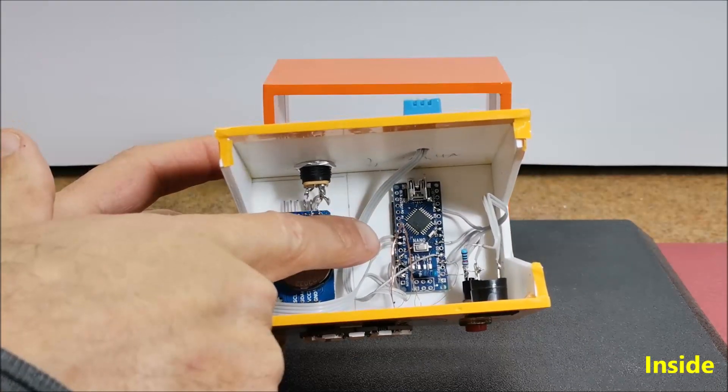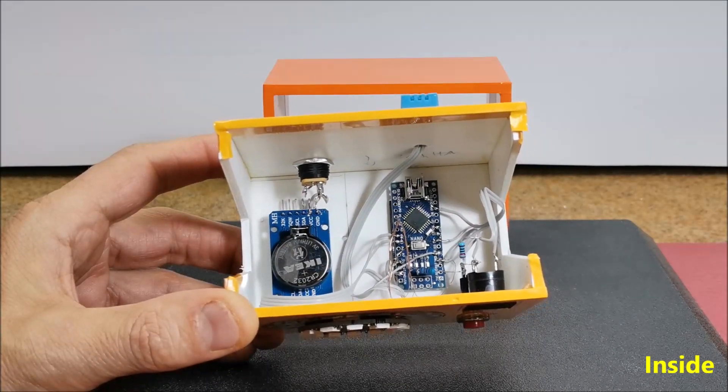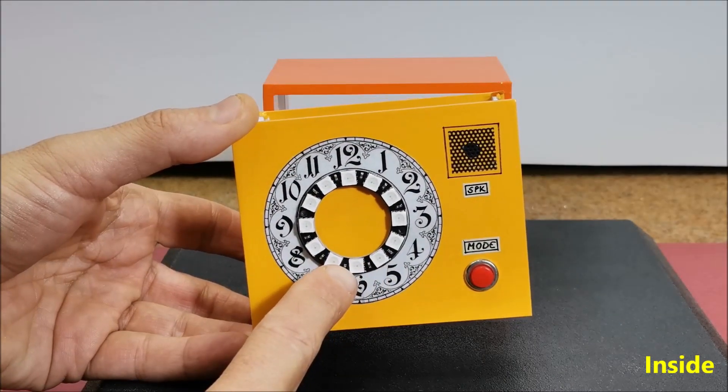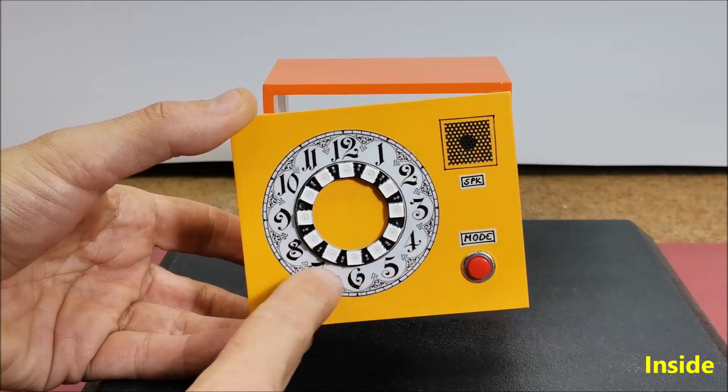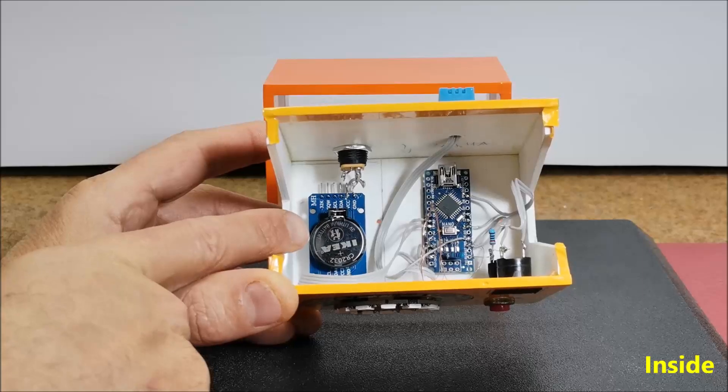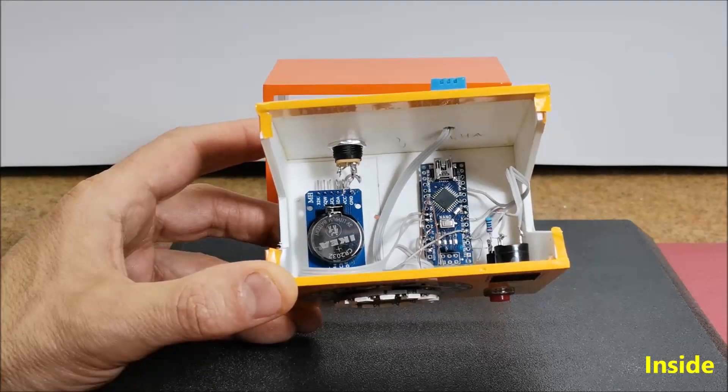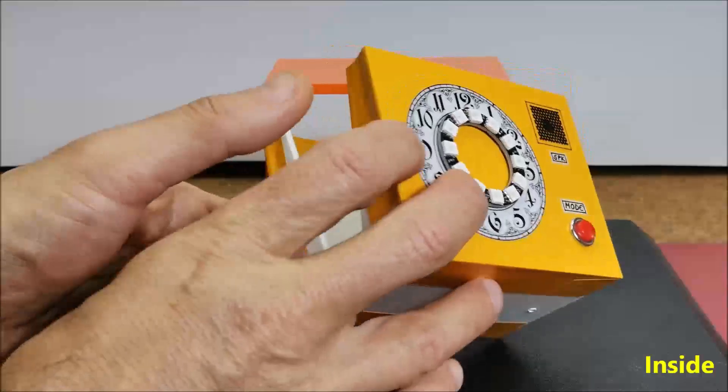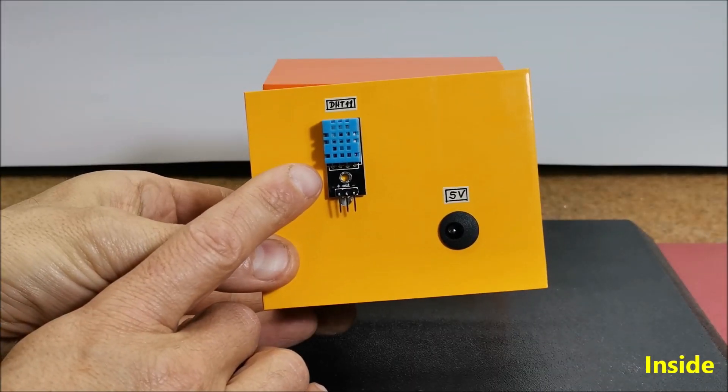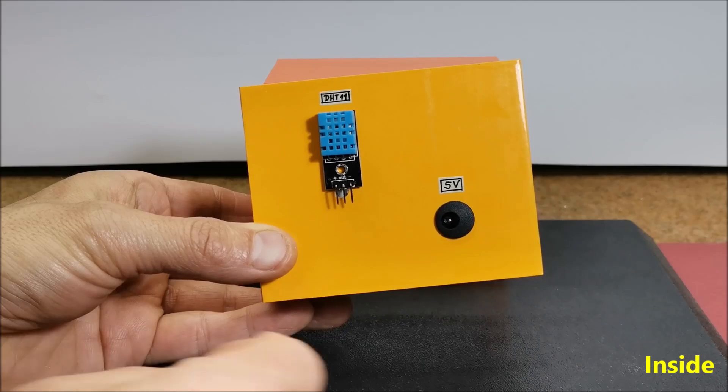Arduino Nano MCU board. Next, addressable WS2812B pixel ring with 12 LEDs. DS3231 real-time clock module. DHT11 temperature plus humidity sensor.